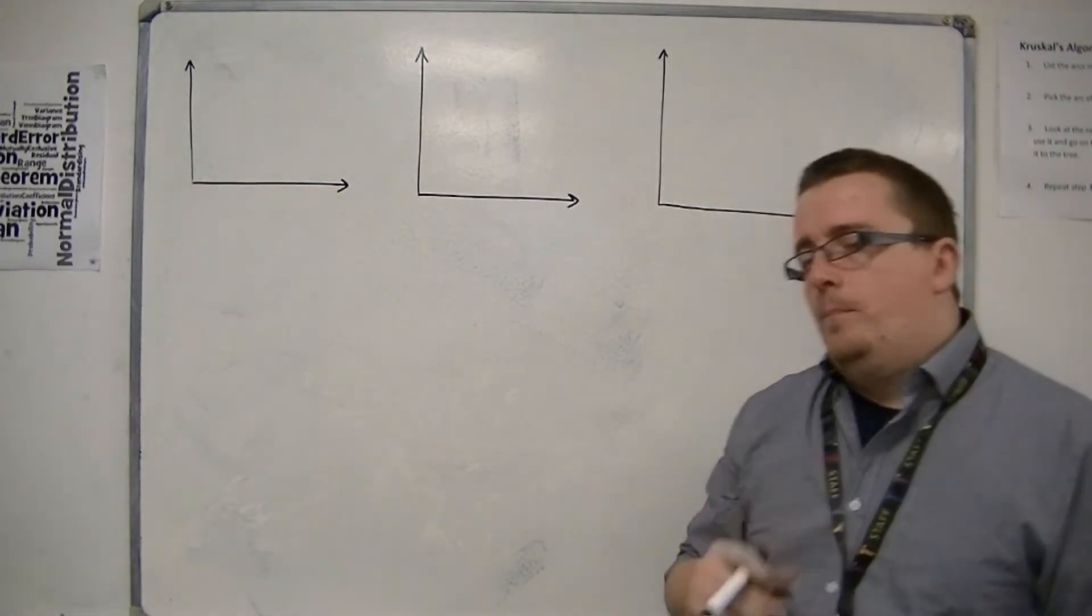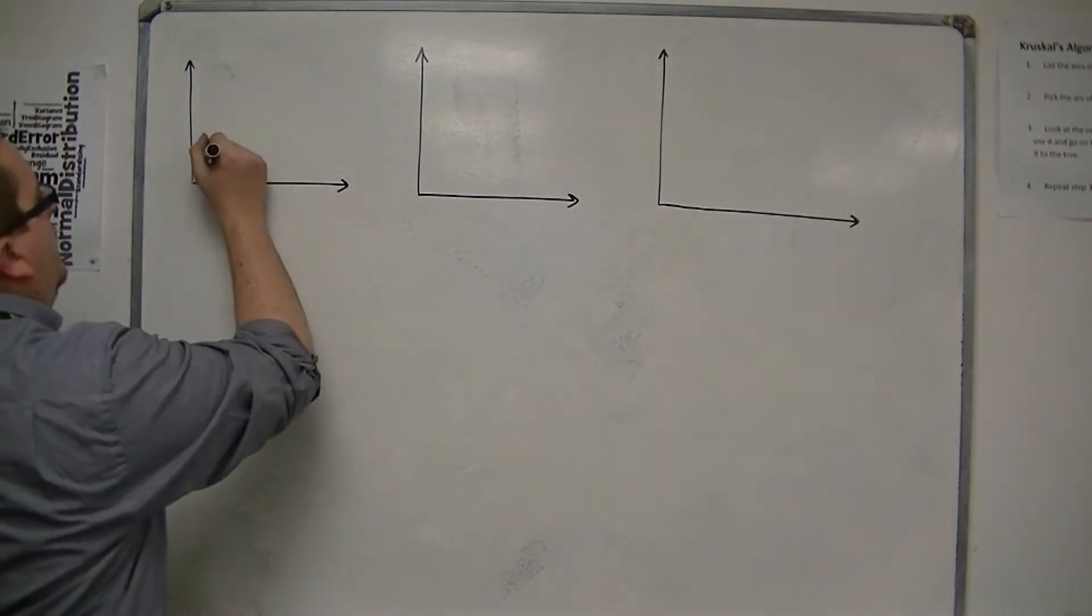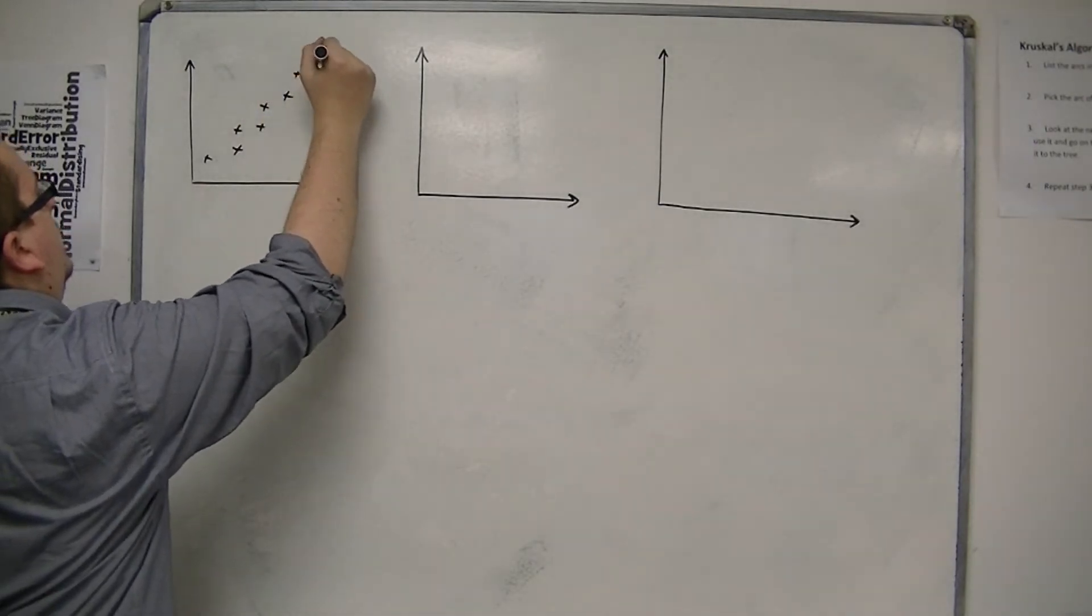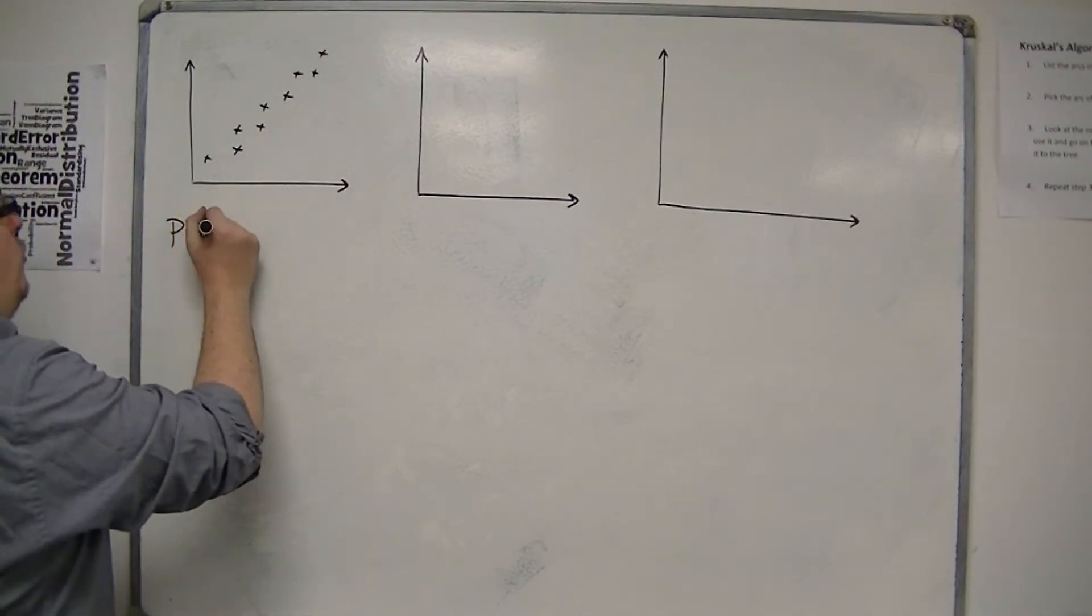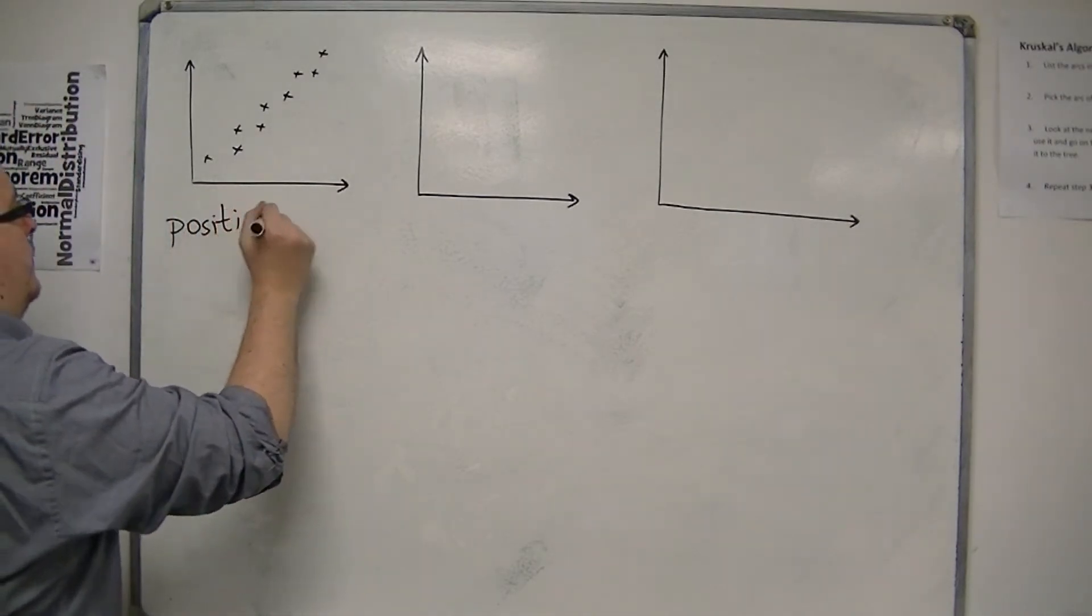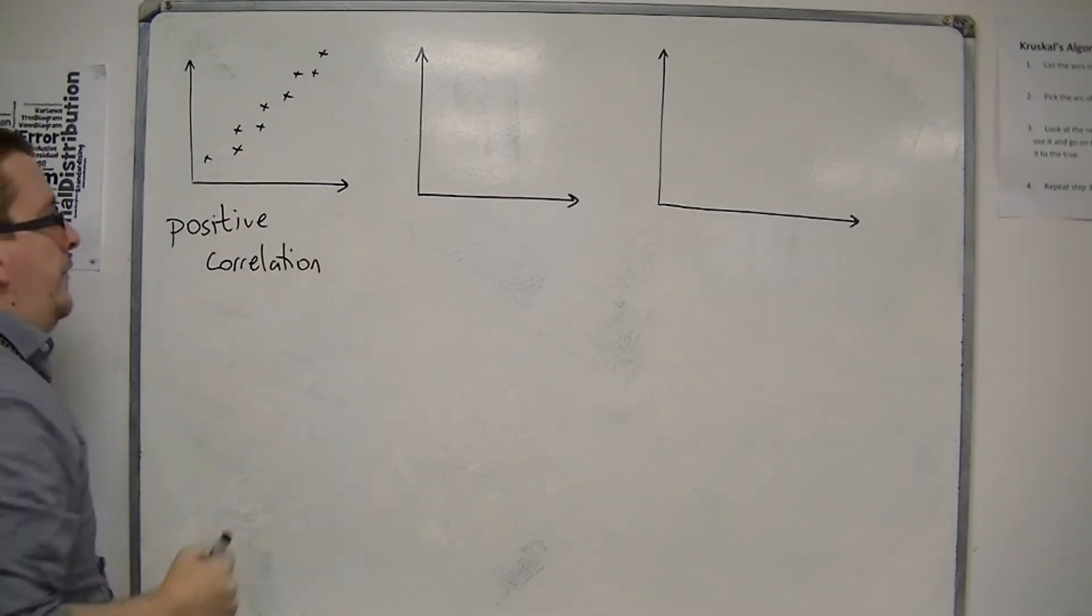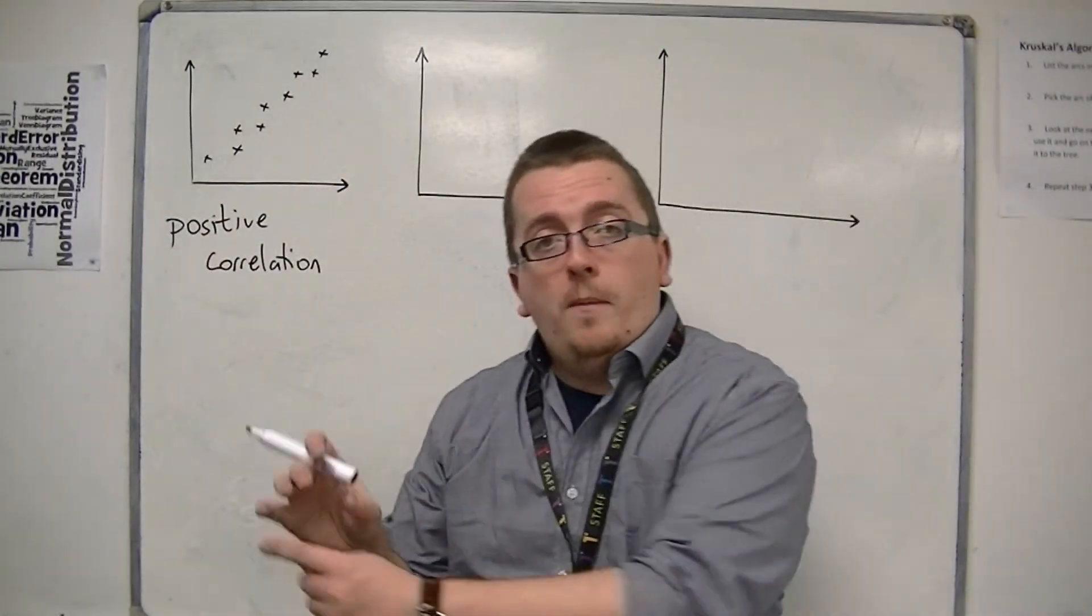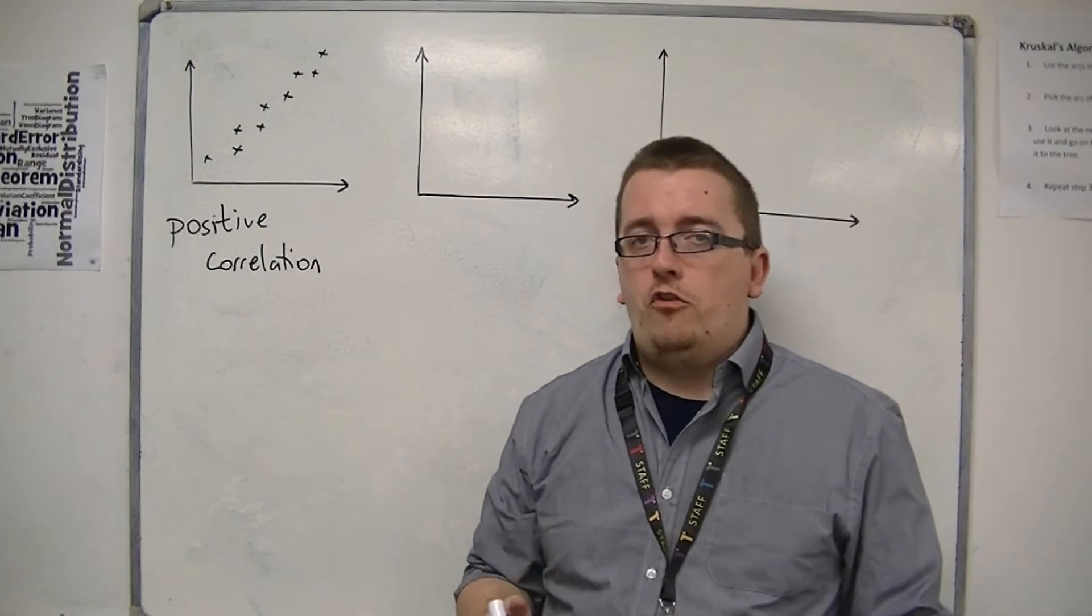It may well be that you find that when you plot your points on a scattergraph, they look like they're going from the bottom left to the top right. And what that would resemble is positive correlation. If you're going from the bottom left to the top right in what appears to be a relatively straight line, then we can call it positive correlation.